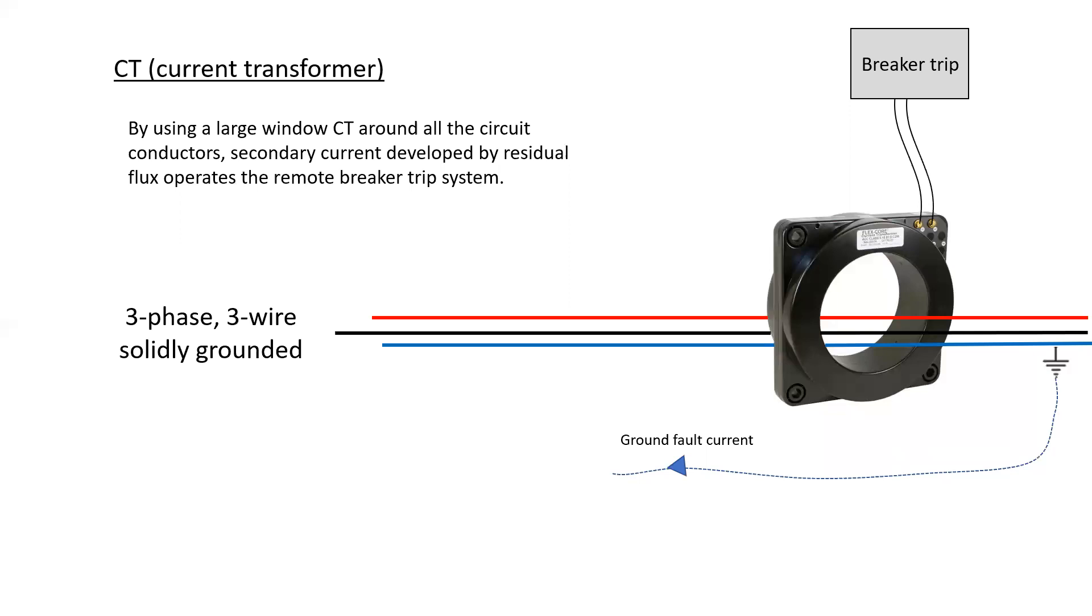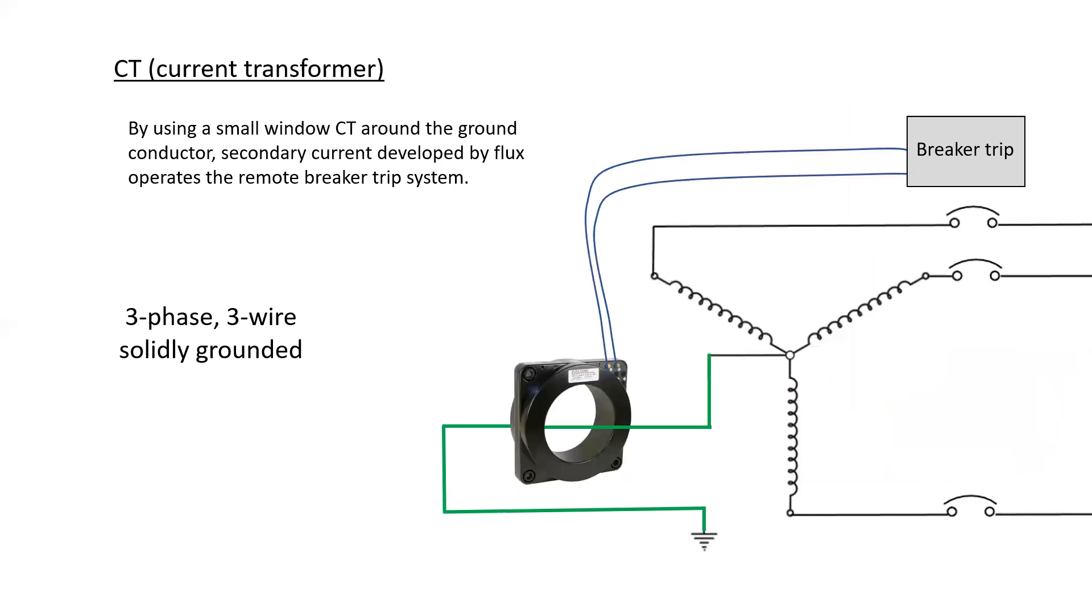If we use a large window CT around all the circuit conductors, secondary current developed by the residual flux will operate the remote breaker trip system, often referred to as a shunt trip. Alternatively, we could use a small window CT around the ground conductor and the secondary current developed by the flux, when there's current flowing through that ground conductor will operate the remote breaker trip system.